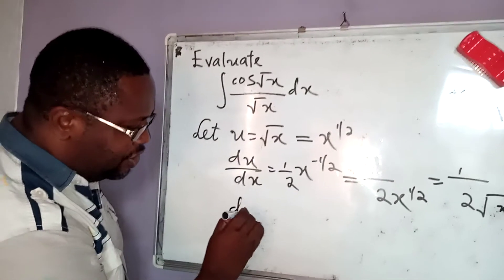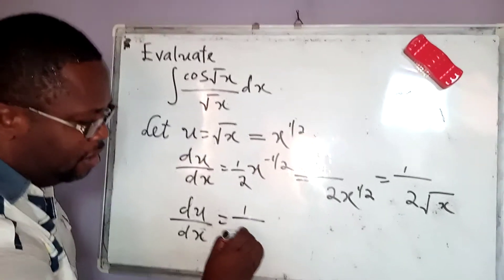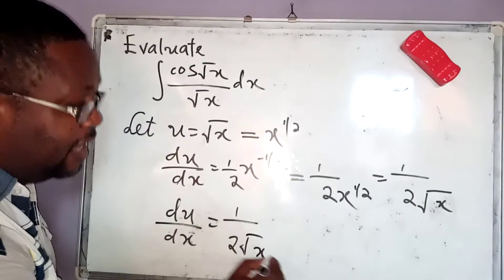So you now discover that du by dx simply becomes equal to 1 over 2 square root of x.